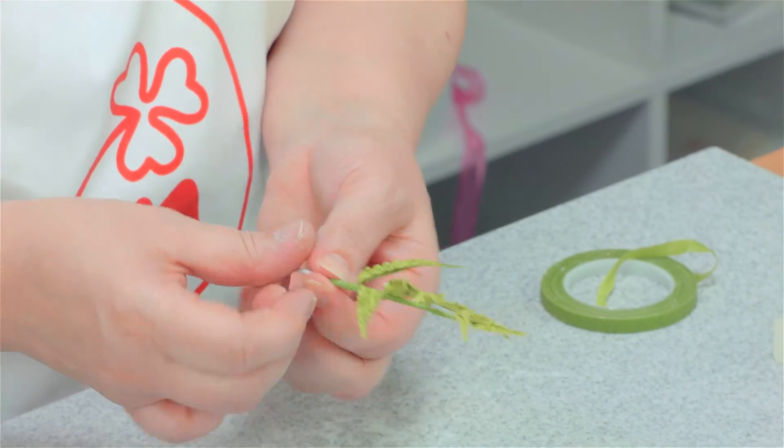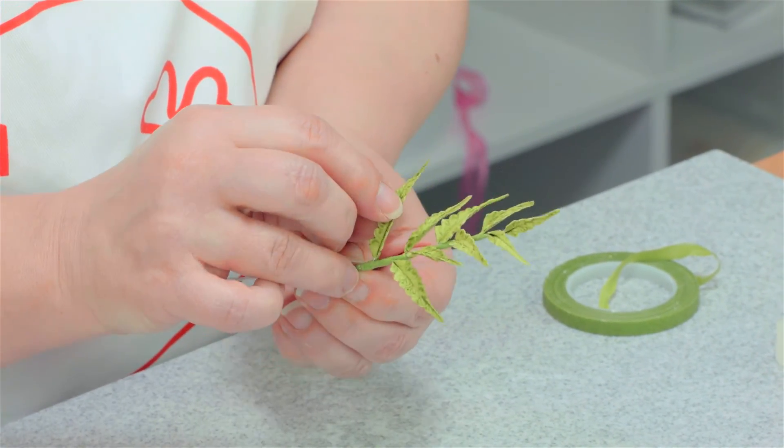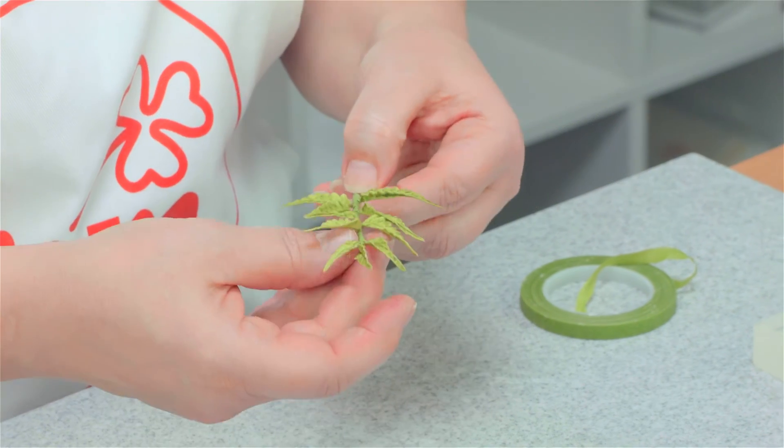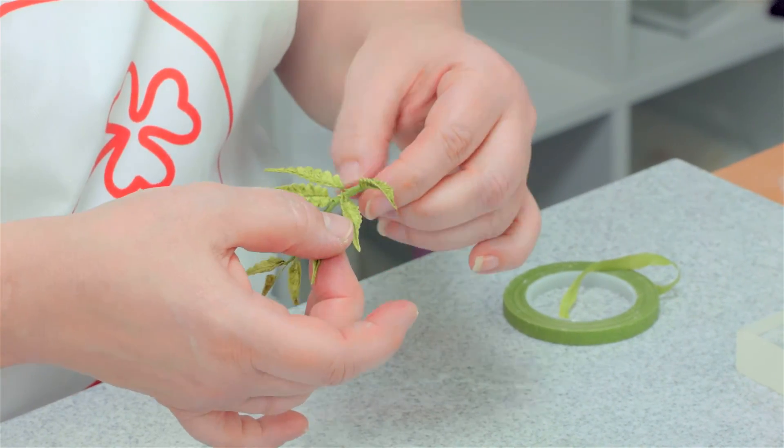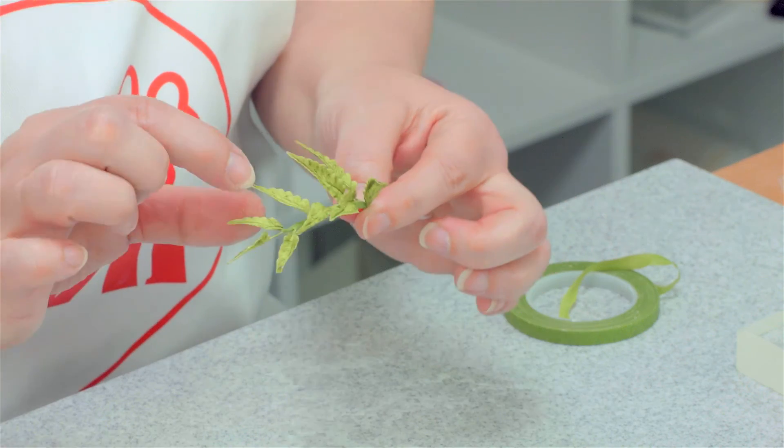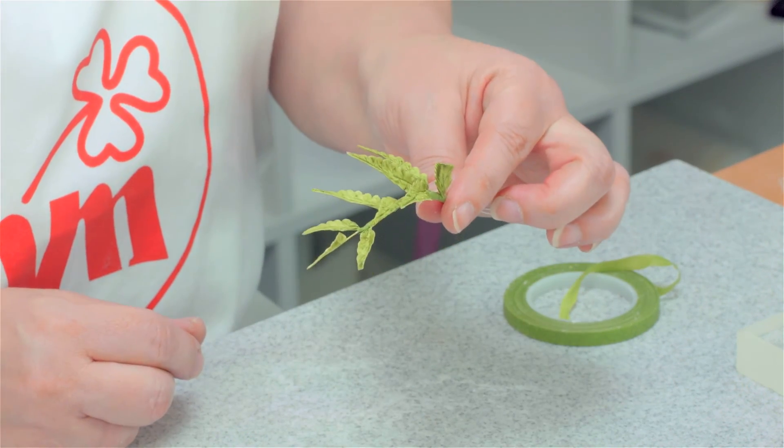What's nice about this is when you've got it to the length that you want it, because each frond is wired individually, you can curve it around or you can shape it to how you want it. So you can make it look quite natural in an arrangement.